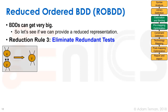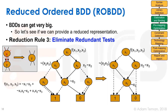Our last reduction rule is to eliminate redundant tests. If a node x has both its zero-arc and its one-arc pointing to exactly the same child node, then testing x is pointless — we skip it altogether. We erase the node x and its arcs, and redirect the incoming arcs to point directly to the child. For example, an x3 node where both arcs point to 1: we eliminate it and point its parent directly to 1.